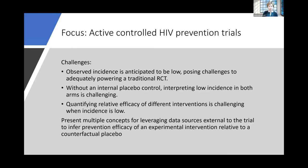The challenges for future active controlled HIV prevention trials — where everybody in the trial is on an active control or an experimental — are that the observed incidence is anticipated to be quite low, which means it's very challenging to adequately power a traditional randomized clinical trial. And if you don't have an internal placebo control within the trial, interpreting low incidence in both arms is pretty challenging. Quantifying relative efficacy of different interventions is also really challenging when incidence is low.